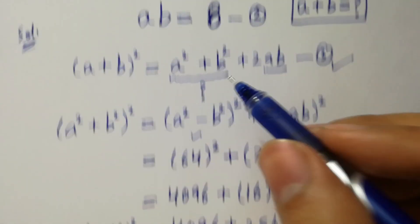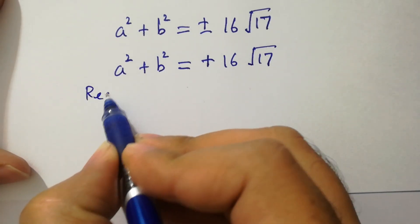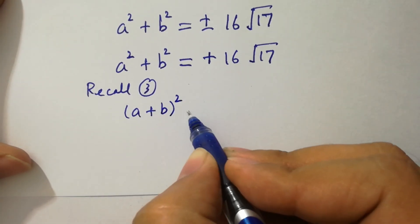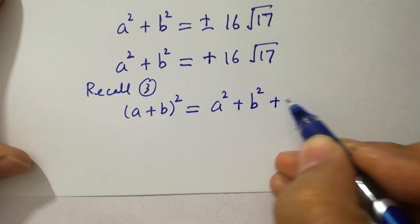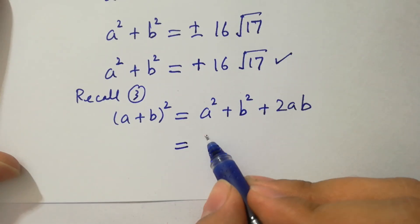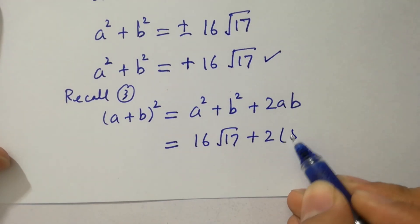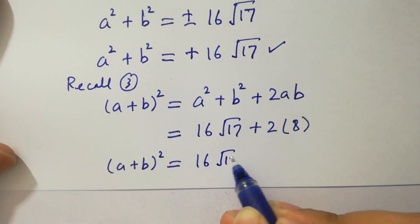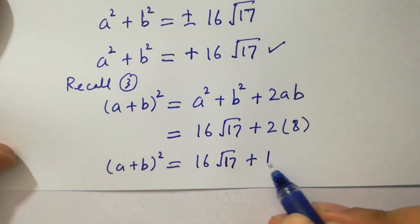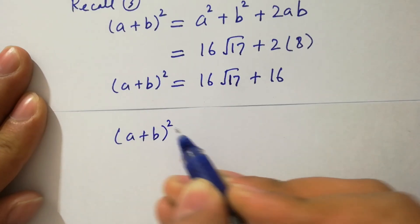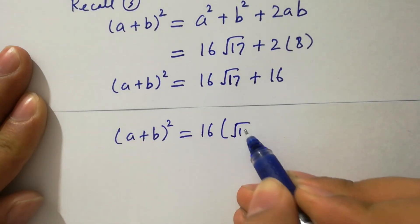Recall the third equation: a plus b whole squared equals a squared plus b squared plus 2ab. Substituting, a squared plus b squared is 16 root 17, so taking 16 as common, we have a plus b whole squared equals 16 times the quantity root 17 plus 1.